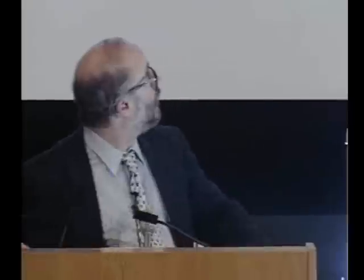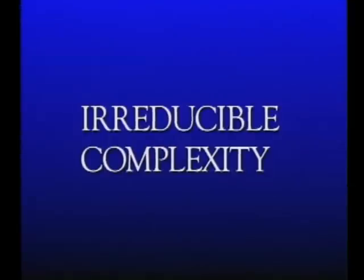In the Origin, he wrote: 'If it could be demonstrated that any complex organ existed which could not possibly have been formed by numerous successive slight modifications, my theory would absolutely break down.' So what kind of system could not be formed by numerous successive slight modifications? One that is what I call irreducibly complex, or has the property of irreducible complexity. An irreducibly complex system is a big challenge to Darwinian evolution because natural selection needs a function to select. For irreducibly complex systems, the function does not appear until the system is intact. And it turns out the cell is loaded with such things.